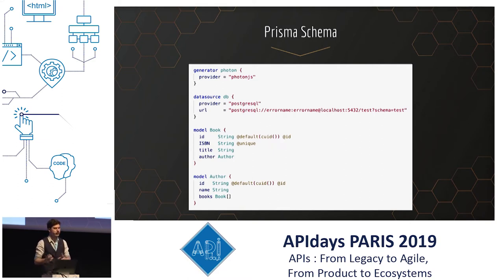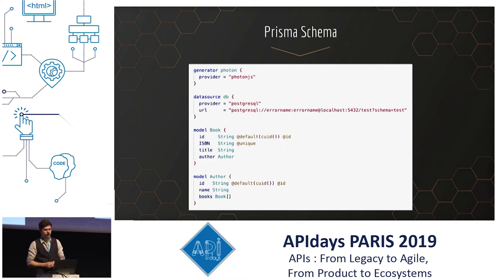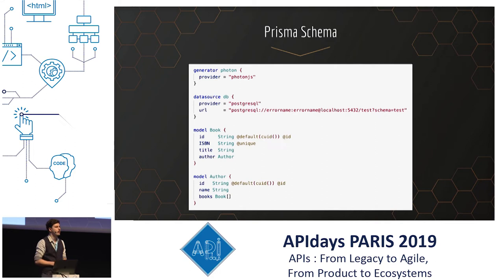Each attribute can either be a scalar — string, number, boolean, etc. — or another model, in which case it creates a relation. Here we have a book which has an author, and an author which has a list of books. Attributes can also have directives. For example, on the ISBN string in the book, there is the @unique directive, which says that in your database you cannot have two books with the same ISBN string.